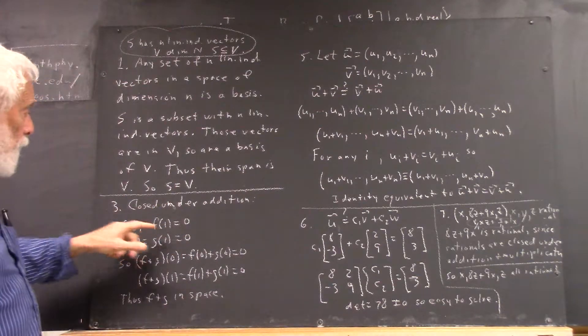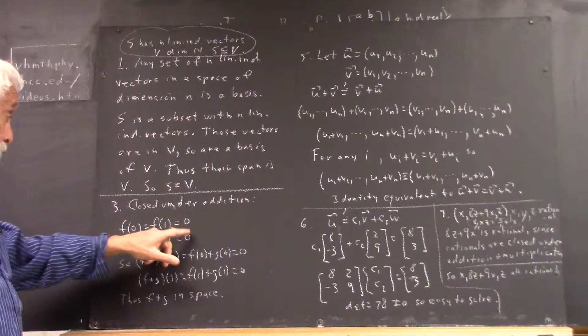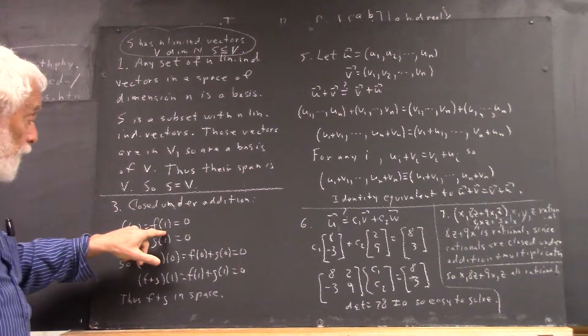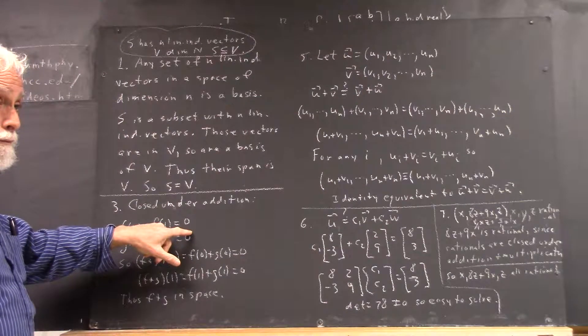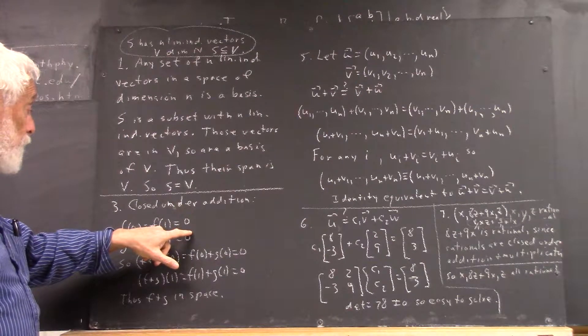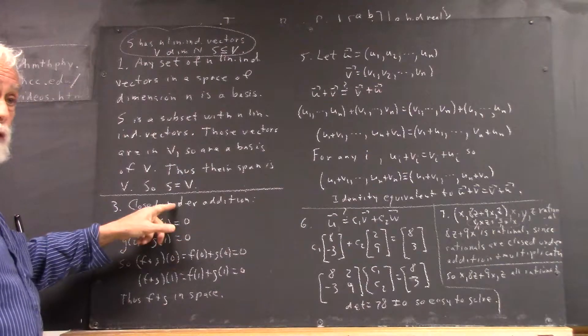So if f of x is a typical function, its value at 0 would equal its value at 1, which is 0. Now we want to prove that this set of functions is closed under addition.